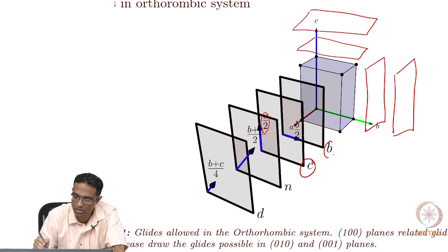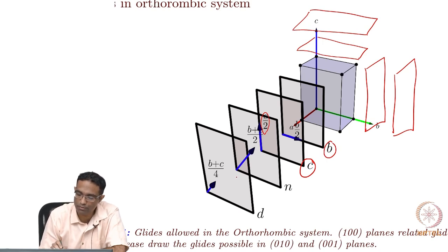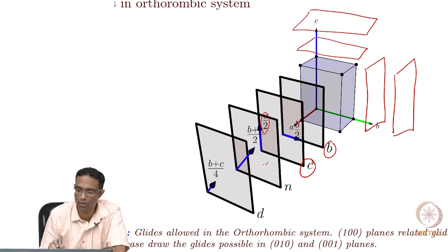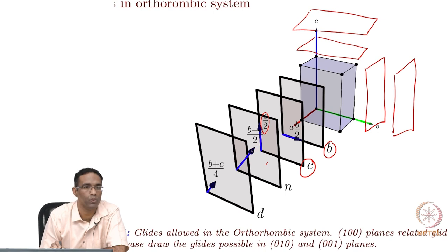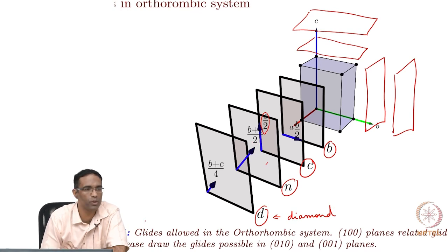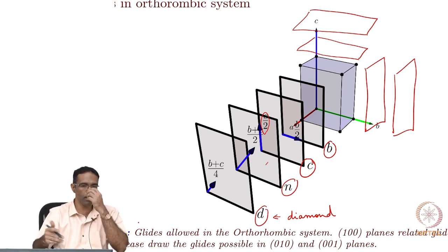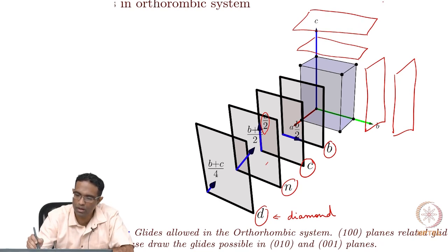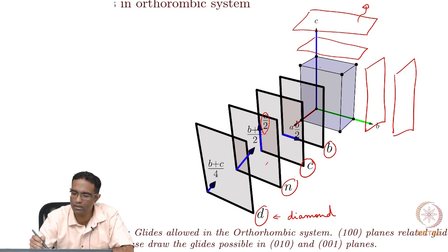So you have C and B glides. It is also possible to have a glide along the diagonal of the mirror. You can reflect an object about this mirror and then glide it by (B + C)/2 — that is called an N glide. Finally, you have what is referred to as a diamond glide, where instead of going (B + C)/2, you go (B + C)/4.